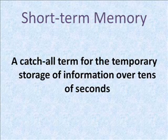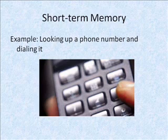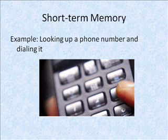This is a review of the types of memory. The first type of memory we'll look at is short-term memory. This type of memory is a catch-all term for the temporary storage of information over tens of seconds. You would use your short-term memory for looking up a phone number and dialing it.